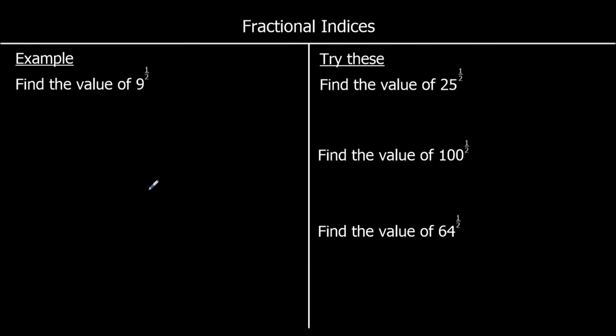The power of a half means square root. So here's a question: find the value of 9 to the power of a half — that's the same as finding the square root of 9. So square root of 9, or 9 to the power of a half, is equal to 3.